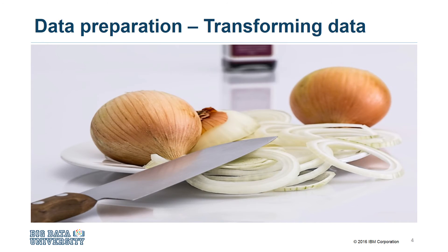To continue with our cooking metaphor, we know that the process of chopping onions to a finer state will allow for its flavors to spread through a sauce more easily than would be the case if we were to drop a whole onion into the sauce pot. Similarly, transforming data in the data preparation phase is the process of getting the data into a state where it may be easier to work with.